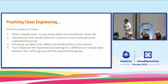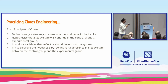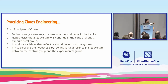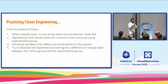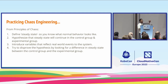Chaos engineering principles state that first, we define a steady state — this is how our application should be behaving. Next, we define the hypothesis: that steady state will continue to be in that state. Now we bring in a particular change, and then we keep on adding some production-ready variables.